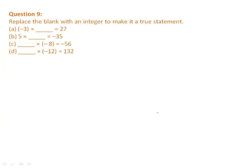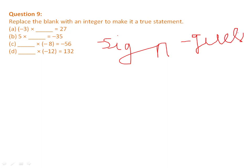For this type of fill-in-the-blank multiplication question, follow two rules. Rule one: first guess the sign of the missing number. Rule two: then guess the number itself. These two steps will help you solve all such questions.